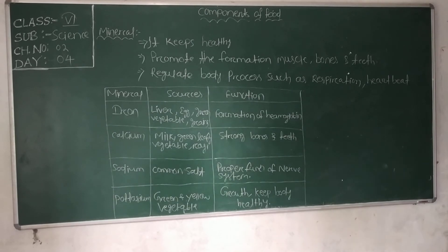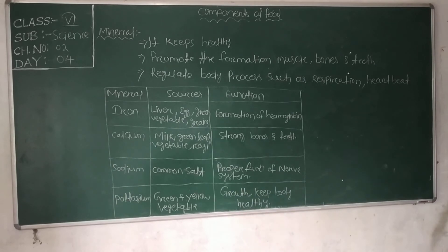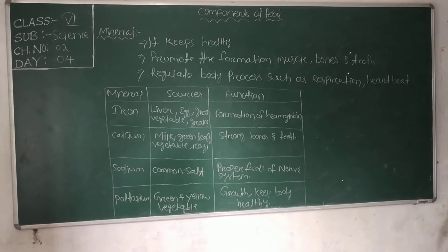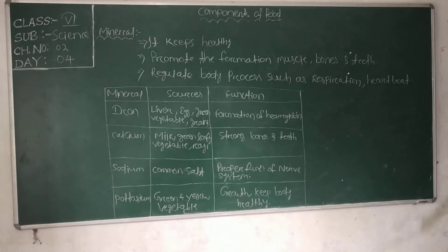The next mineral is phosphorus. Phosphorus is found in meat, peas, egg, and whole grain. Taking phosphorus helps in the development of strong bones and teeth and in managing energy, which helps in combating the stress on our body.